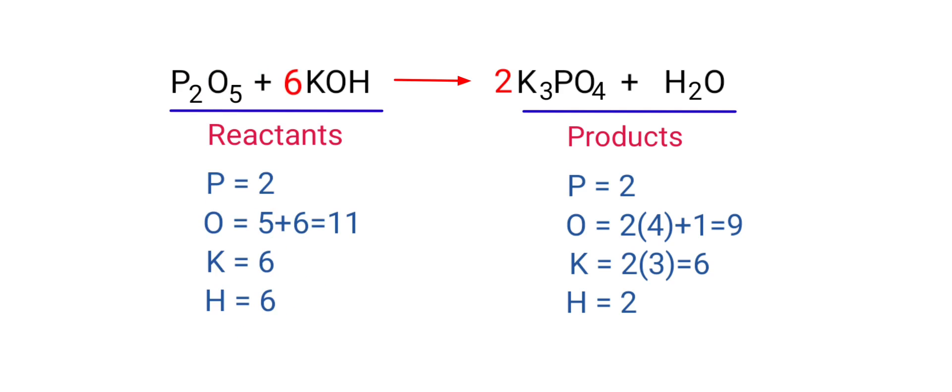The potassium atoms are now balanced. Next we need to balance the hydrogen and oxygen atoms. To do this we need to put a coefficient of 3 in front of H₂O.